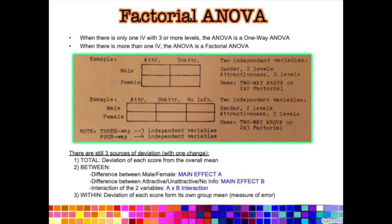A factorial ANOVA is when we have multiple factors that we are predicting are going to affect our DV. Those multiple factors are going to be multiple independent variables. In a one-way ANOVA there was just one independent variable with three or more levels or conditions. A factorial ANOVA is different because with it, multiple factors are predicted to have an effect on a DV. When there is more than one IV, the ANOVA is a factorial ANOVA.